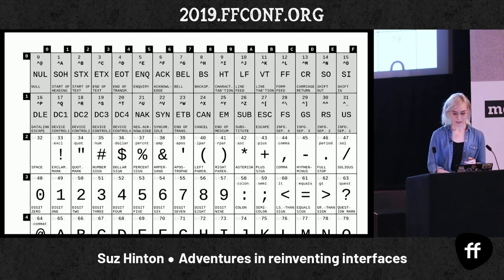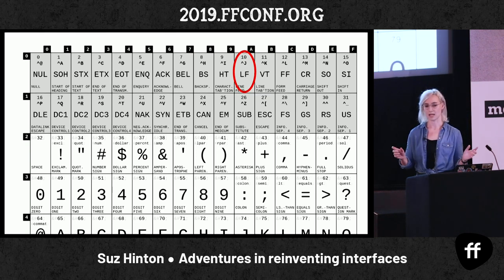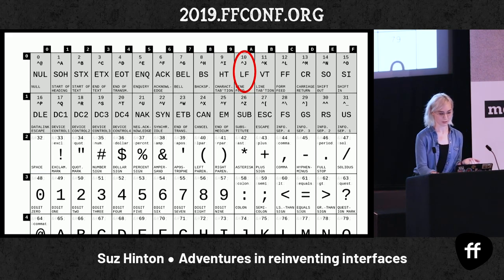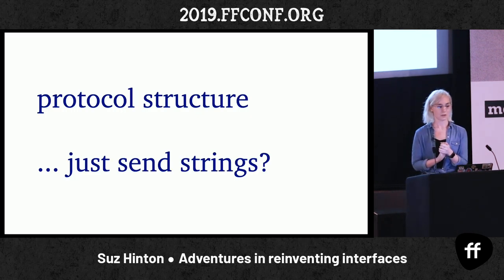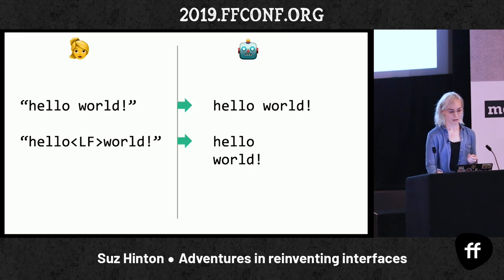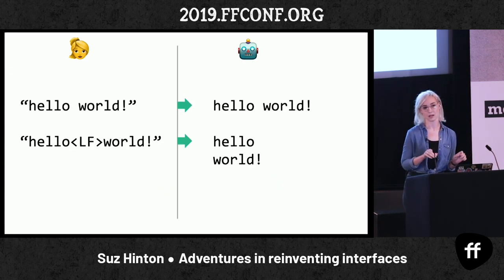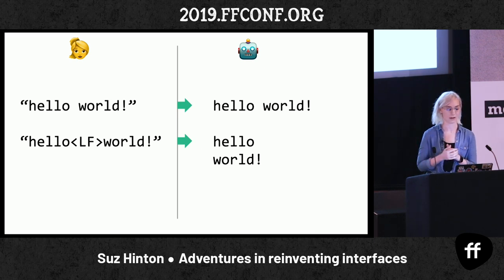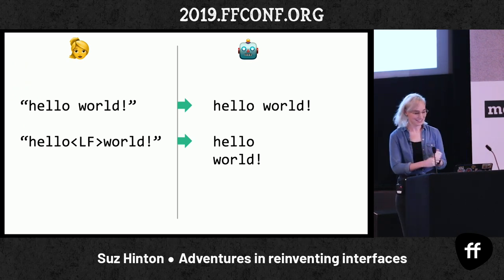At the top of the ASCII table there's also line feed, and our robot needs to understand when we want to line feed. So line feed — tick. Being able to actually send text — tick. If you type 'hello world', the robot just gets 'hello world'. And if you write 'hello' followed by the line feed character, you'll get 'hello' but then the machine knows to go to a new line. But we've still got underlined text and all of that to handle.